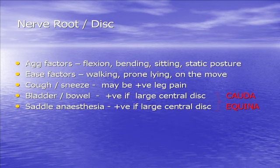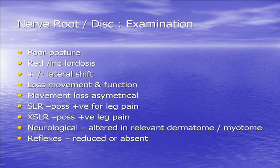Aggravating factors vary widely from patient to patient. Cough and sneeze may be positive for leg pain. If they have a large disc, you're already on red alert for cauda equina symptoms. On examination: poor posture, reduced or increased lordosis, loss of movement and function — movement loss usually asymmetrical. Straight leg raise can be positive for leg pain, and a crossed straight leg raise positive for leg pain suggests a slightly bigger disc. Neurologically there should be altered findings in the relevant dermatome and myotome, with reflexes reduced or absent.